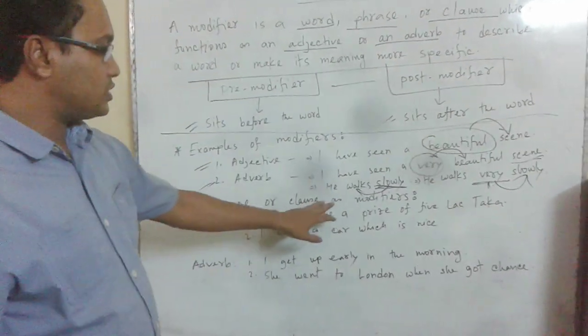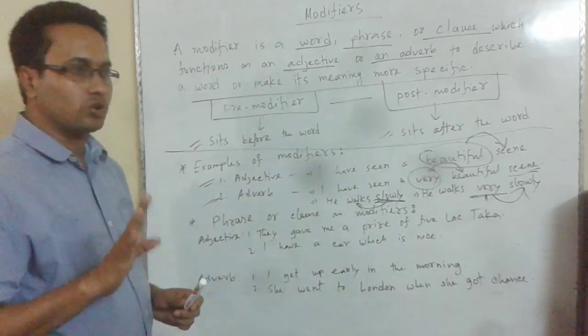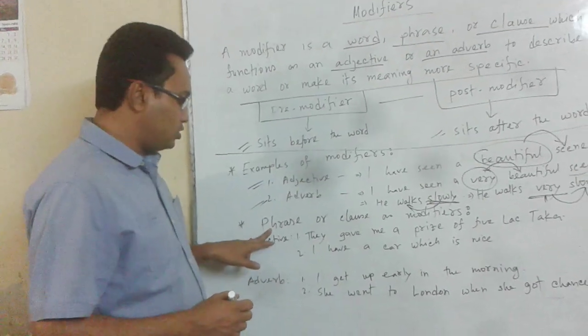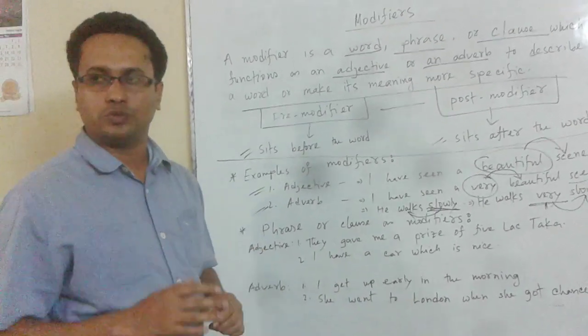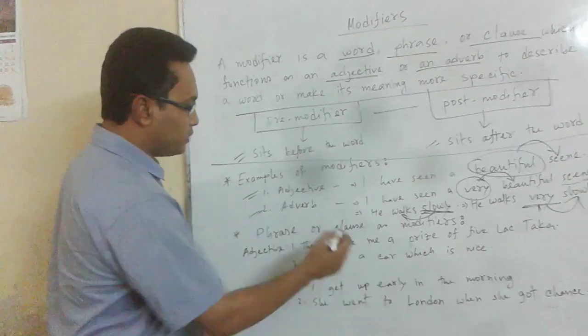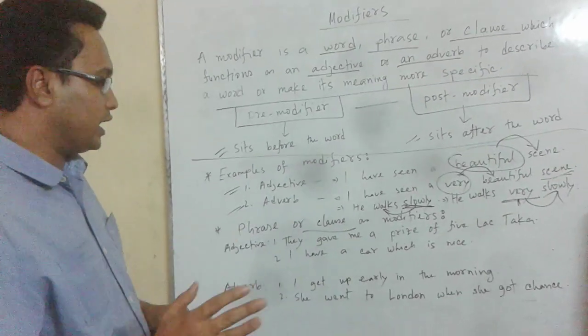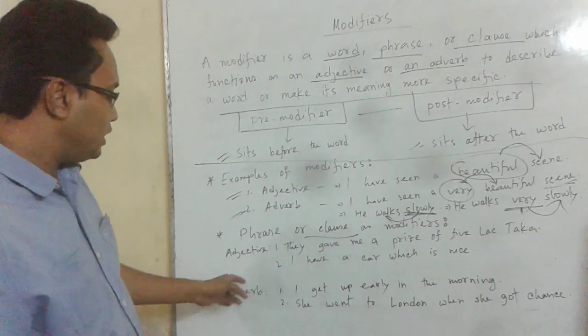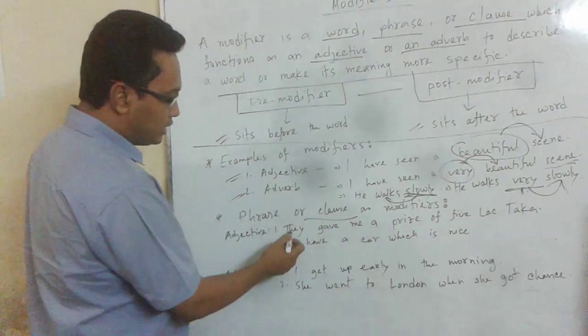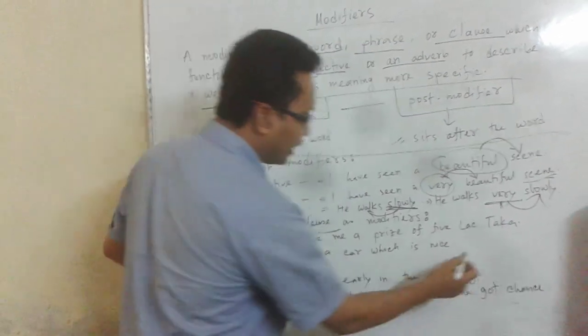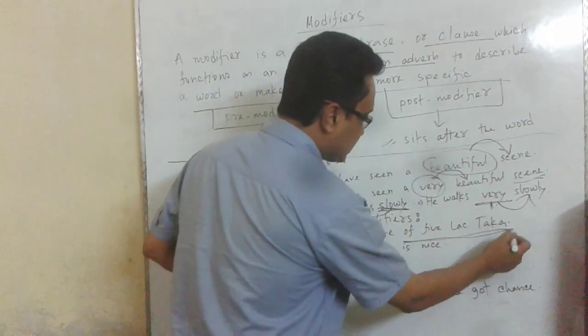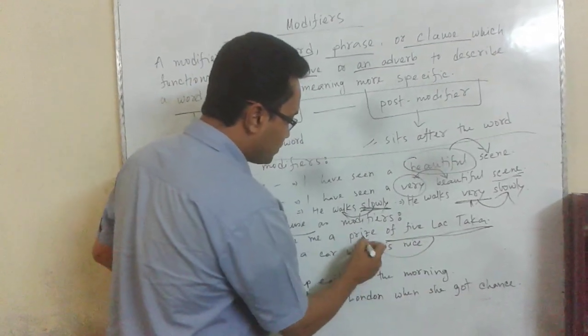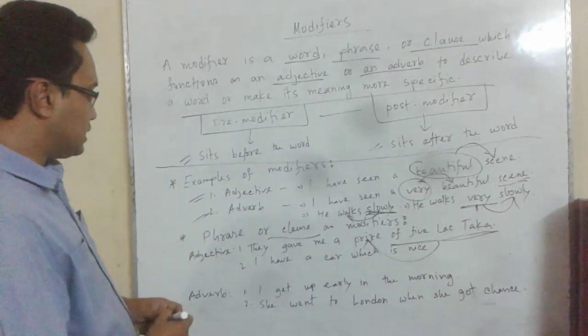Phrase or clause as modifier. As an adjective: They gave me a price of $5,000. Of $5,000 modifies the word price, so it's an adjective phrase. I have a card which is nice. Which is nice is a clause modifying the noun card, so it's an adjective clause.